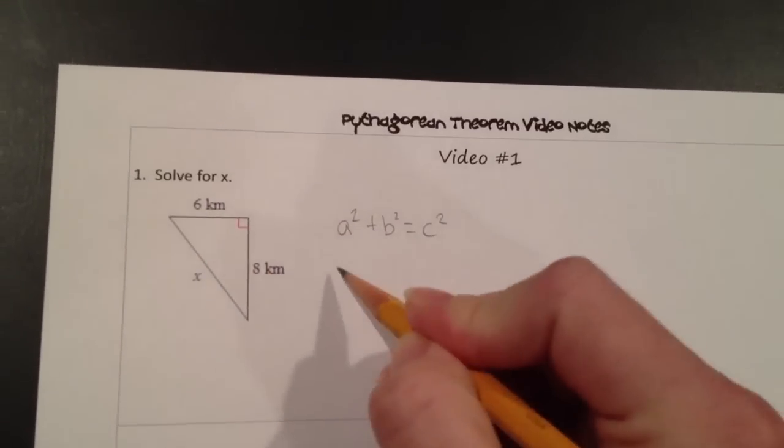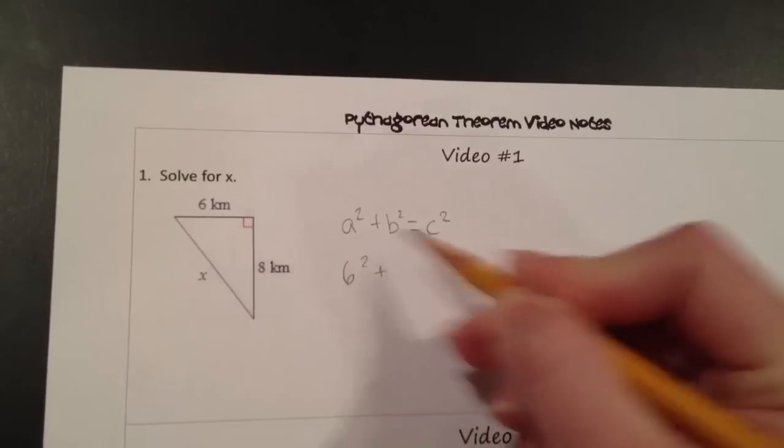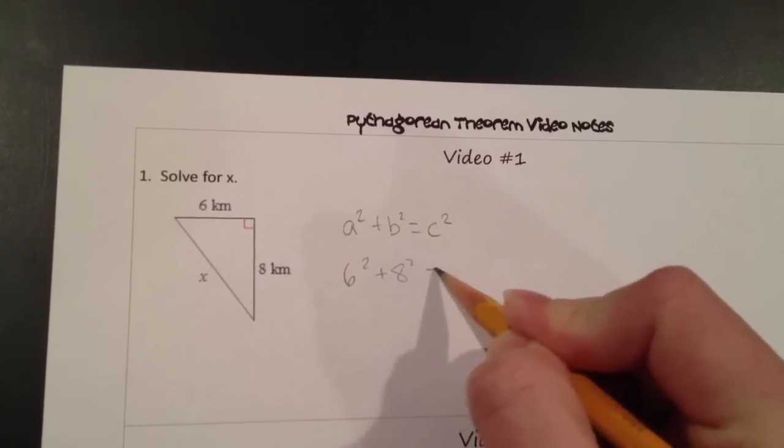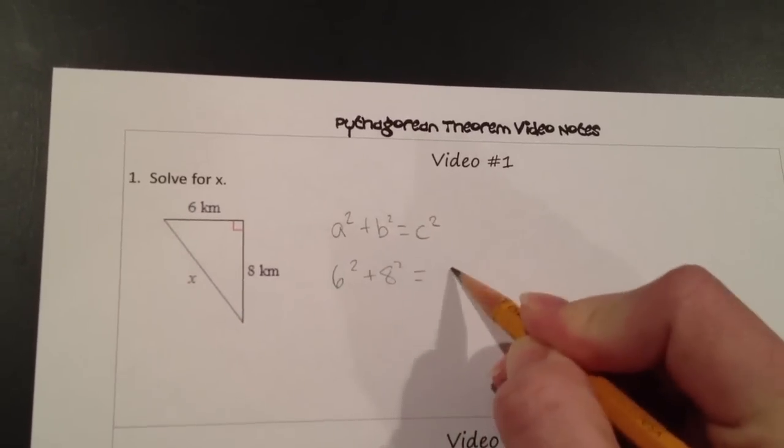So one leg is 6 kilometers, so 6 squared plus the other leg, 8 kilometers, 8 squared equals our hypotenuse squared, which is x squared.